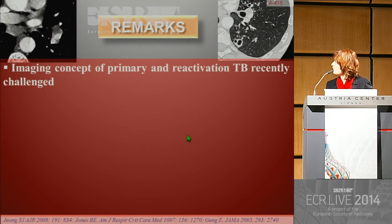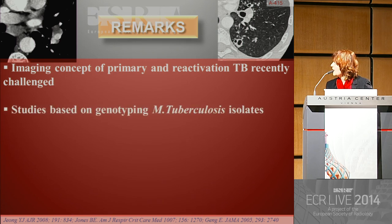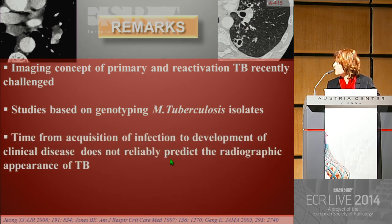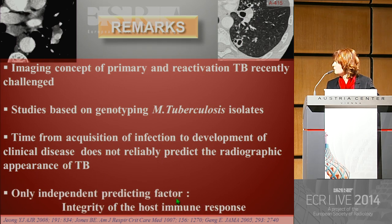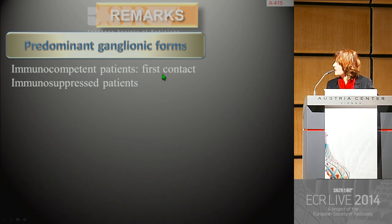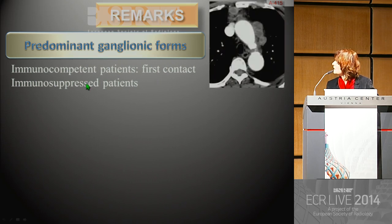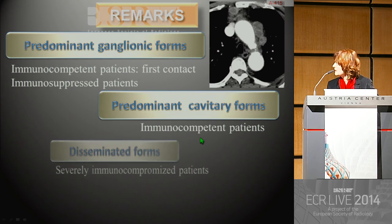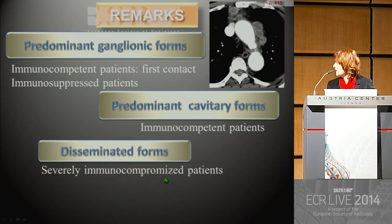Traditional imaging concepts of primary and reactivation TB have recently been challenged. Studies based on genotyping of Mycobacterium tuberculosis isolates have proven that the time from acquisition of infection to development of clinical disease did not reliably predict the radiographic appearance of TB. The only independent predicting factor was the integrity of the host immune response. Predominantly ganglionic forms concern immunocompetent patients, necrotic lymph nodes have a differential diagnosis including fungal disease, metastatic lymph nodes, and lymphoma. Predominantly cavitary forms concern immunocompetent patients, and disseminated forms mainly concern severely immunocompromised patients.